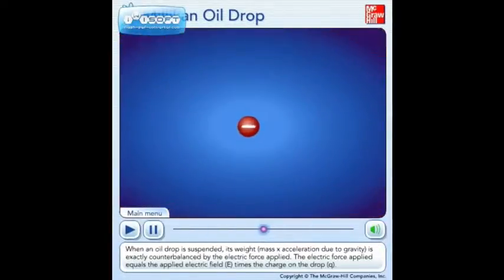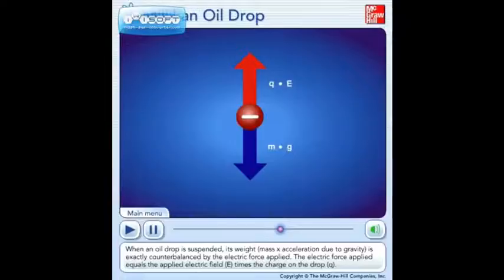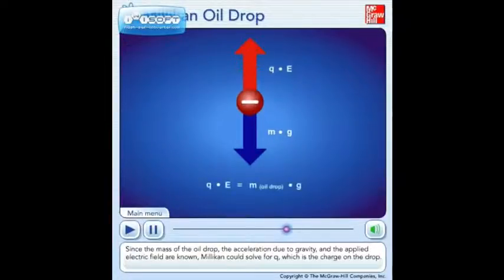When an oil drop is suspended, its weight, mass times acceleration due to gravity, is exactly counterbalanced by the electric force applied. The electric force applied equals the applied electric field, E, times the charge on the drop, Q. Since the mass of the oil drop, the acceleration due to gravity, and the applied electric field are known, Millikan could solve for Q, which is the charge on the drop.